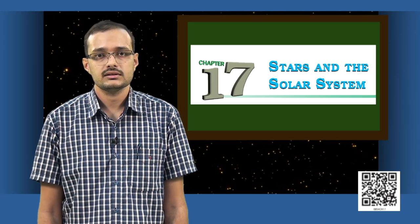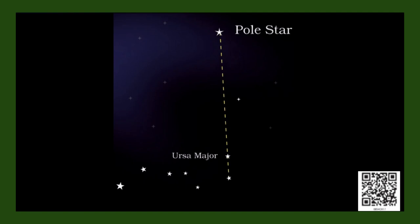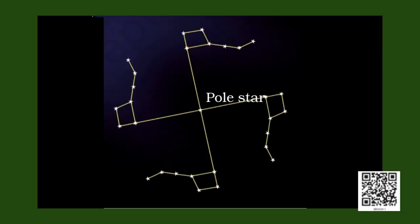How do you find the pole star? If you look at the Saptarshi, you see the two stars that point north. If you follow the direction pointed by these two stars, you can see the pole star. You should remember that the pole star is visible only in the northern hemisphere.